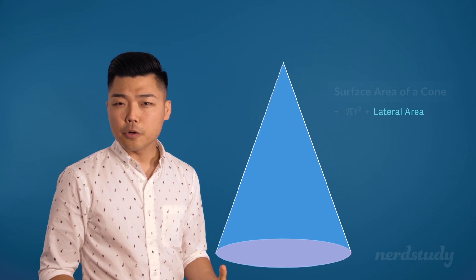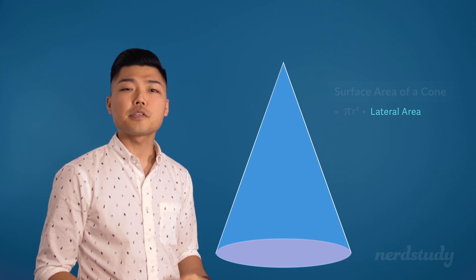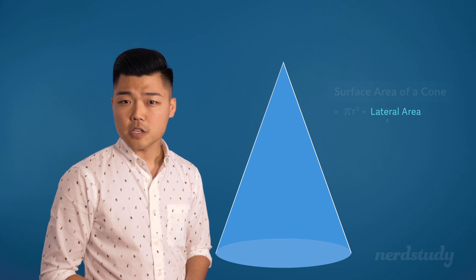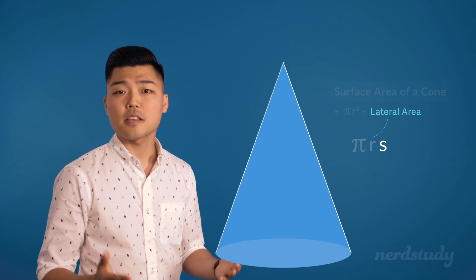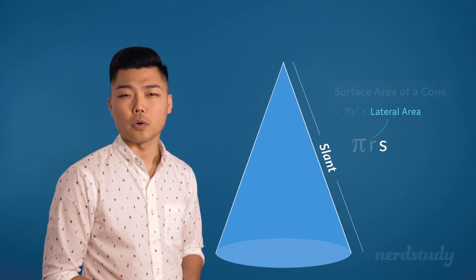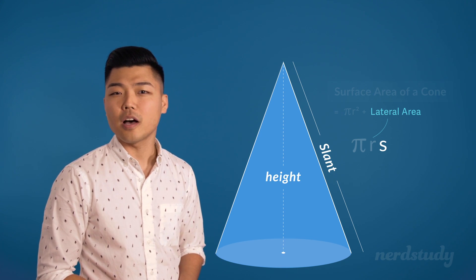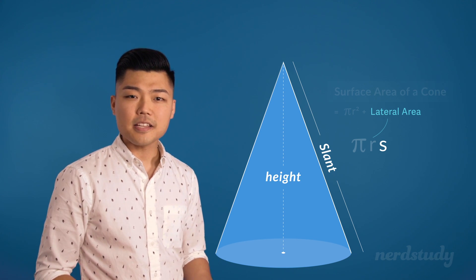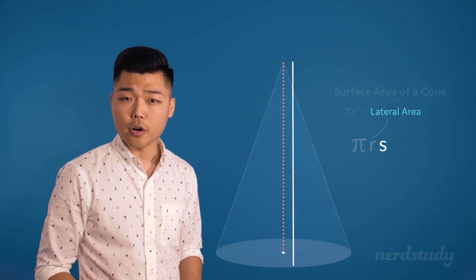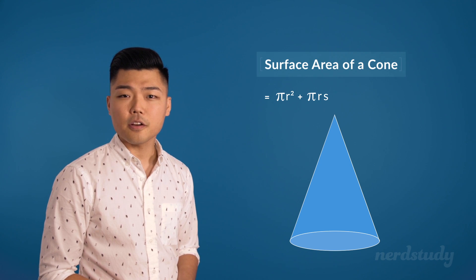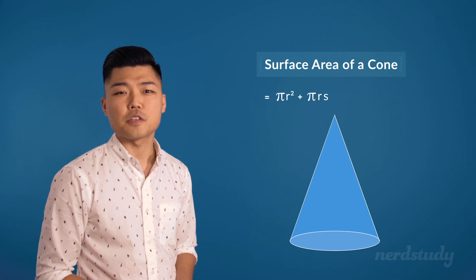The lateral area of a cone is everything else other than the base area. The formula for this is pi r s, where s is the slant height of the cone. Do note that this is different from the actual height of a cone. The slant height will be a little bit longer than the actual height. So if we add these areas together, we get the total surface area.